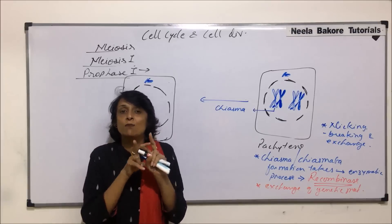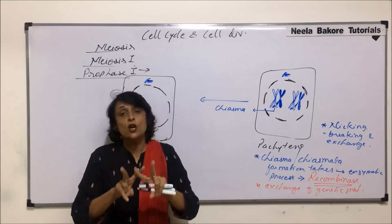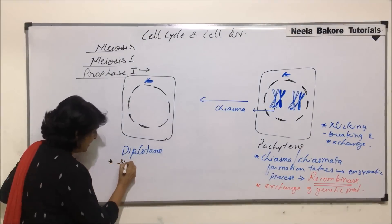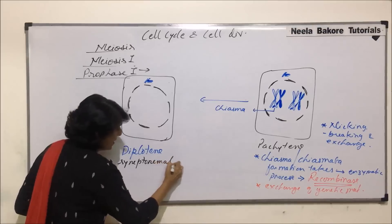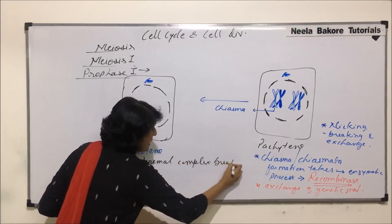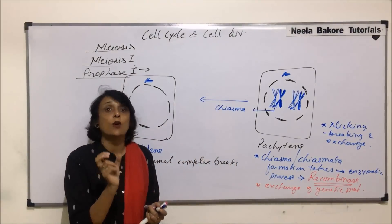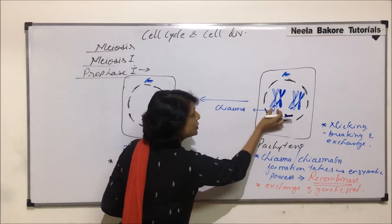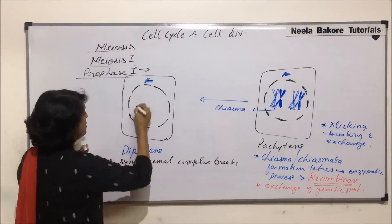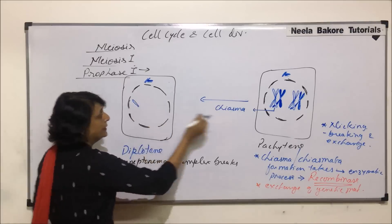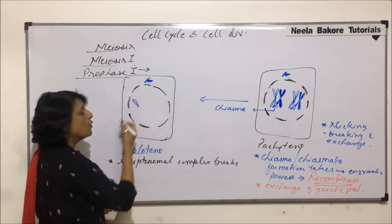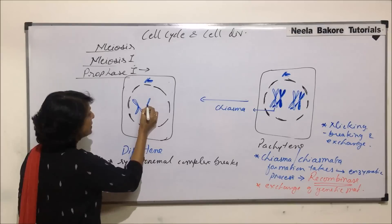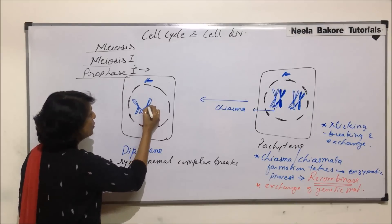Even if the synaptonemal complex breaks, the chromosomes will still remain attached at the crossover point. So here the synaptonemal complex breaks. The structure holding the homologous chromosomes together is no longer there. These chromosomes, if we are talking of this pair, would start to move away from each other. The sister chromatids would also start to condense because their job is now over. So here we see the chromosomes have moved away from each other.